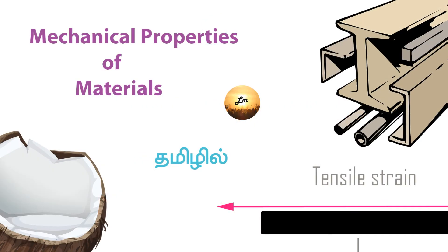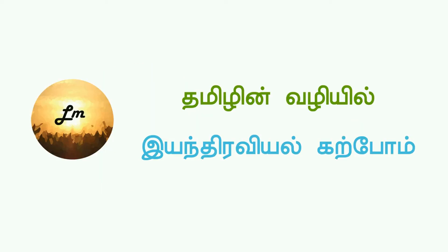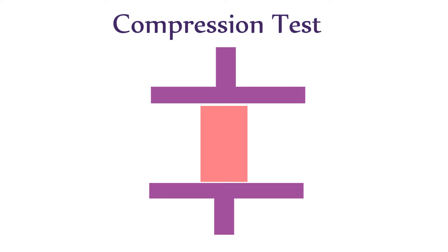We have already seen mechanical properties in Part 1. For example, creep, yield strength, ductility, and brittleness. Please see that video. Now we will see Part 2.